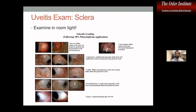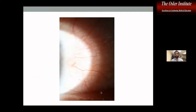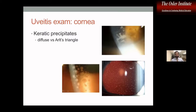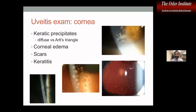We examine the sclera in room light when concerned about scleritis. At the cornea, we look at keratic precipitates. Mutton fat KPs are greasy and large. Tiny diffuse KPs across the corneal endothelium are seen in heterochromic iridocyclitis, where we see round and stellate KP. Atypical KPs — white, irregular, and non-round — can indicate intraocular lymphoma. So the pattern of KPs can tip us off to certain diagnoses. We also look for corneal edema, scars, and keratitis.